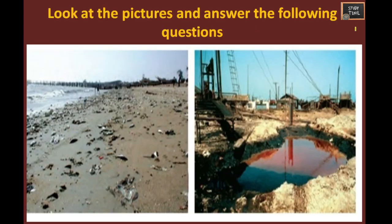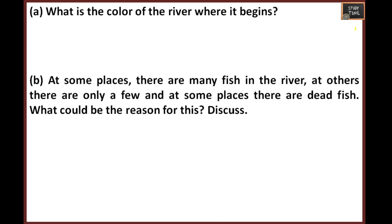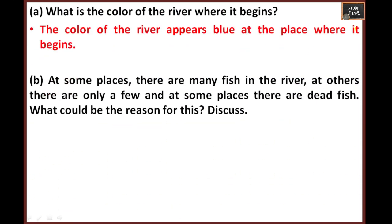You can make your own story and give a title. Now look at the picture and answer the following questions. Observe the picture carefully. Here you can see fishes — in few places there are many fishes, in few places there are dead fish. What is the color of the river where it begins? The color of the river appears blue at the place where it begins. At some places there are many fish, at some only a few, and at some places there are dead fish. What could be the reason for this?